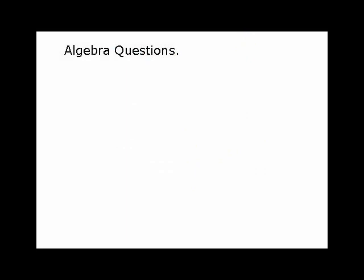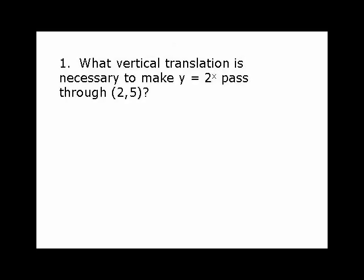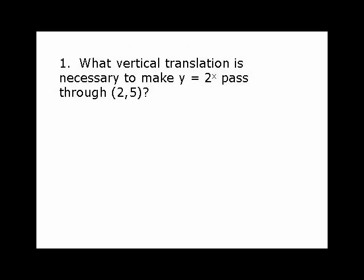Now the algebra questions, I'm calling these algebra questions, but I'm also going to look at a non-algebraic solution to them. These also are exam type questions. So we start off with what vertical translation is necessary to make y equal 2 to the x pass through 2 comma 5. Now this is a vertical translation, and you're given one point. And the translation we're looking for could be found by going into this form. I'll take this y minus k is equal to 2 to the x. The k value represents the vertical translation.